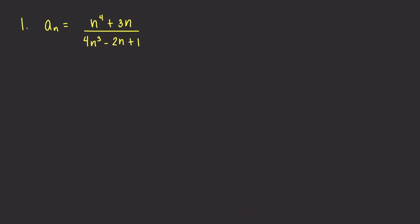Let's look at this first sequence where a sub n is equal to n raised to 4 plus 3n, all over 4n cubed minus 2n plus 1. Recall that to show that a sequence is convergent, we need to show that the limit of a sub n as n goes to infinity exists — meaning it's a real number. If the limit does not exist, then we say the sequence is divergent.